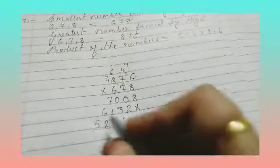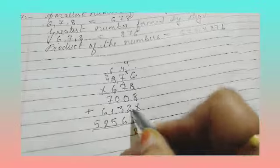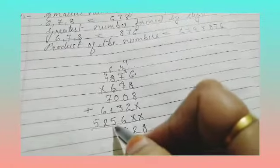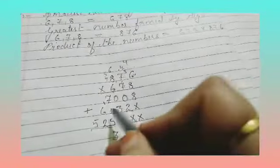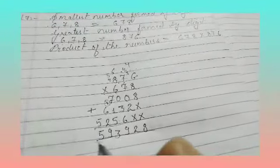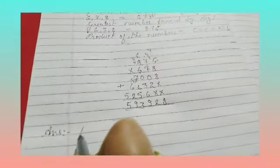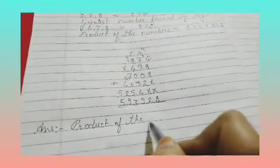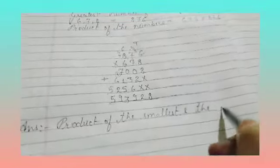Okay, now children we are going to add this up. 8, 2 plus 6 is 8, 7, 8, 9. 7, carry over 1. 8, 9, 10, 11, 12, 13, write 3, carry over 1. 6, 7, 7, 8, 9 and 5. Okay children, so this is our answer.